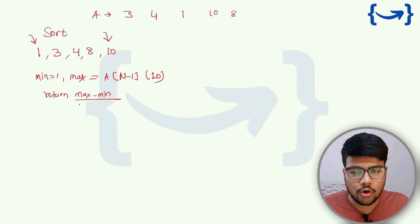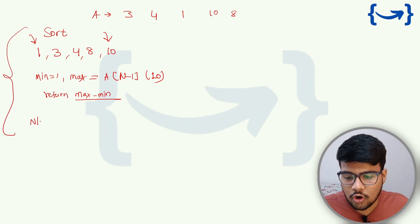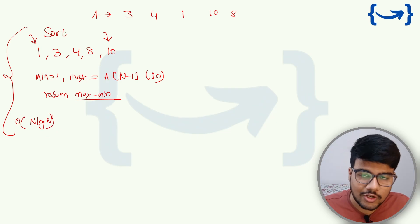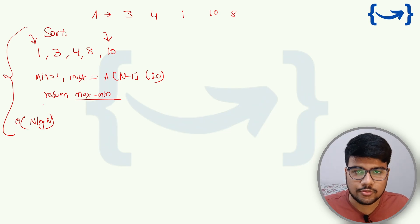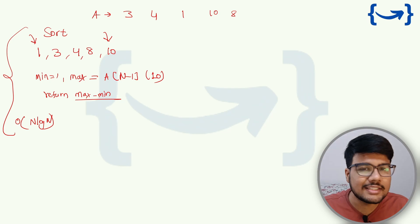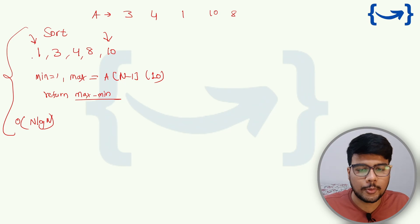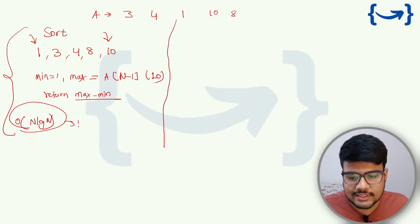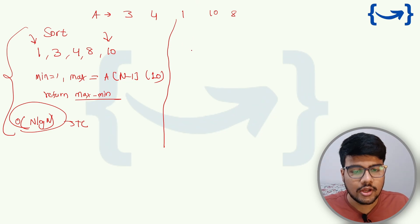Now, why do we need another approach? Because sorting takes O(N log N) time. This solution will work, but be prepared for the worst case — if the constraint is high, you need to write an optimal program. O(N log N) is high compared to O(N), so we'll write an O(N) solution.